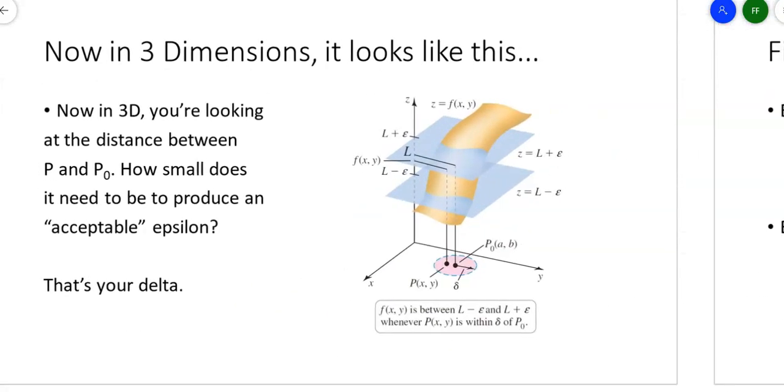It looks like this. You're looking for the distance between P and P sub 0 on the xy plane. Look at that circle around the xy plane. How small does that delta need to be to produce an acceptable epsilon? Epsilon here is on the z-axis, this distance from the limit above and below. I thought it might be interesting to see where my delta and epsilon land in three dimensions rather than two.